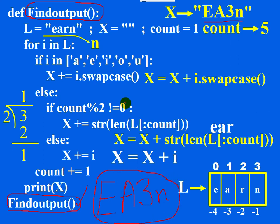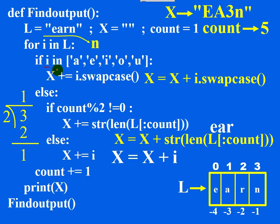Please bear in mind the new points. One: swapcase — it works with alphabets. If the character is lowercase, it is converted to uppercase and vice versa. Two: the in operator — if this character is present in this list, true is returned; otherwise false is returned. Three: slicing — if the first index is not given, by default it is 0. Count variable at that point contains 3, so L[0:3] returns all characters starting with index 0 ending with index 2, and this substring is returned as answer.